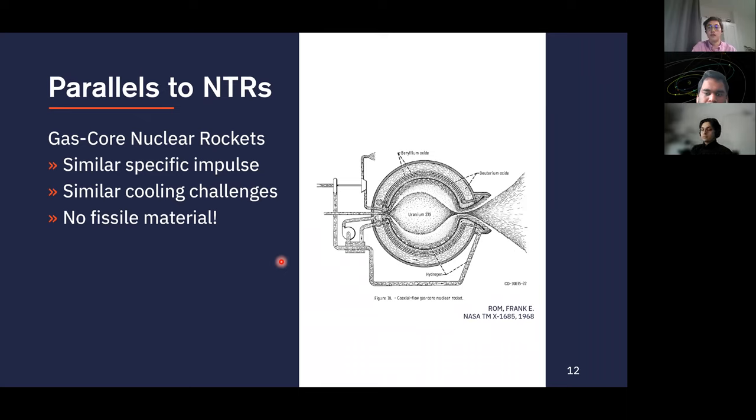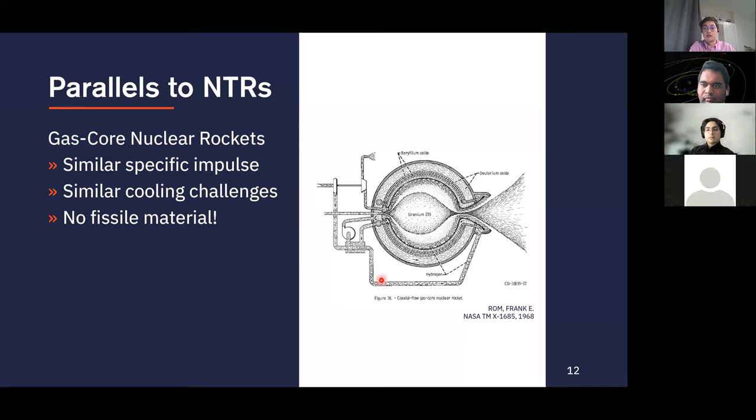The architecture is very similar to gas core nuclear rockets. Both are based on some non-solid heat generator at the core that heats up a gas and expels it out of a nozzle. They have similar specific impulses and similar cooling challenges. We took a lot of inspiration from these designs from the late 60s. One big difference is we don't have fissile material, so we get the same performance without sending uranium into space, without sending a nuclear reactor into space.